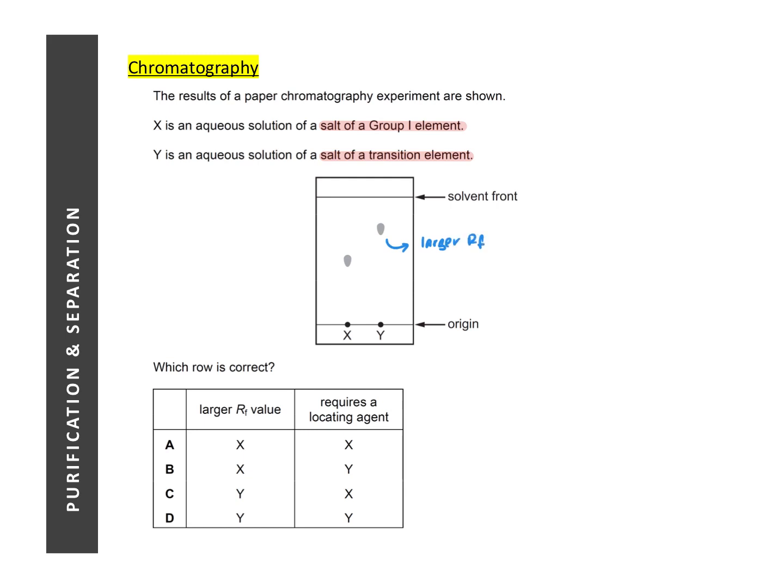Next, whether or not a spot requires a locating agent depends on whether it's colored and again this would require some knowledge that you will learn later on in a later chapter. In a later chapter of periodic table, we will learn that transition element compounds or salts are usually colored. So if they are colored then they don't require a locating agent whereas salts of group one, two or three elements, they are usually colorless. So they would require a locating agent. So with that in mind, X would require a locating agent and Y would have the larger RF value, meaning C is the correct answer.